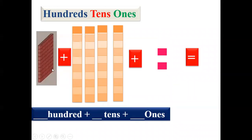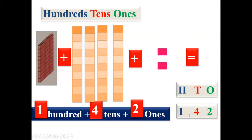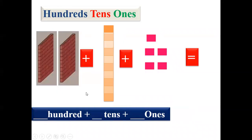Now look at the next one. This full block is representing hundreds — we can see only one, so we'll write one. Now we can see one, two, three, four — four tens are there, so we'll write four. And here we can see two ones are there, so we'll write two. The answer is one in hundreds, four in tens and two in ones — that is one hundred and forty-two.